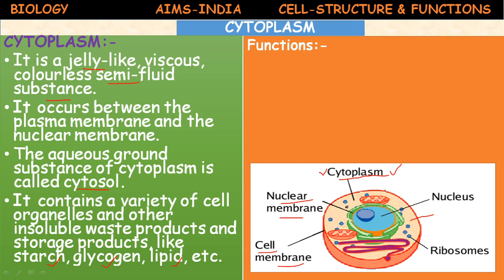The protoplasm was renamed cytoplasm. Originally it was called protoplasm, meaning 'life fluid'; later it was named cytoplasm, meaning 'cell fluid.' The cytoplasm consists of the nucleus and other cell organelles — all embedded in this cytoplasm.